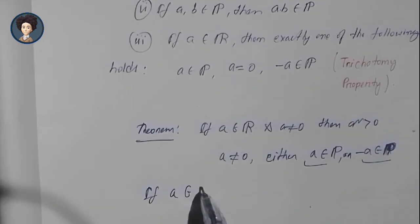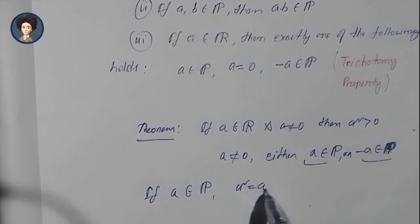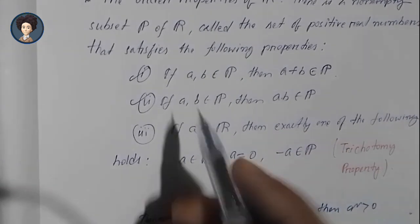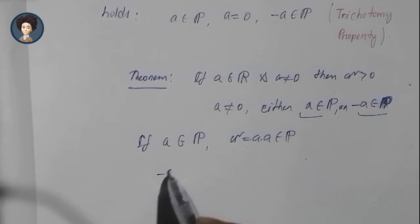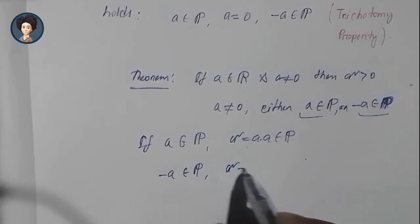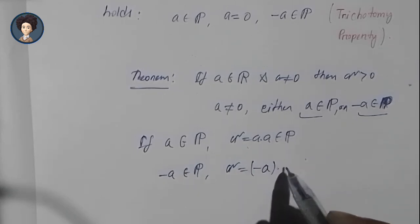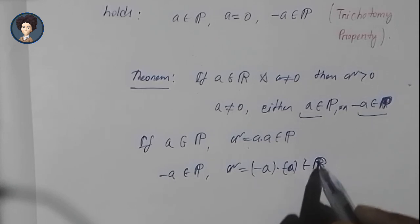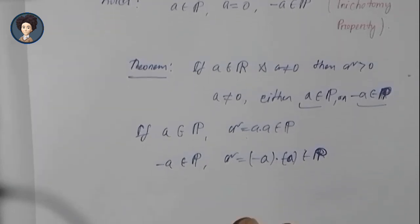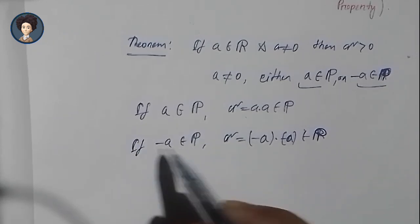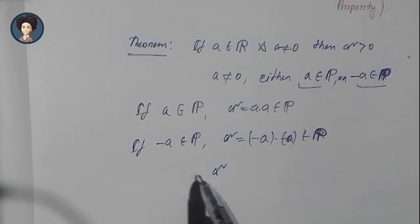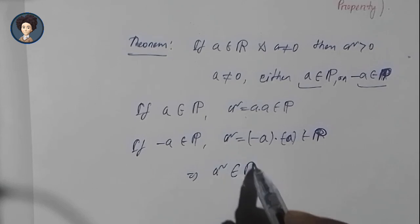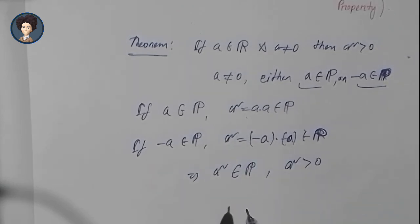For each case: if A belongs to P, then A squared equals A times A, which also belongs to P by the second property. If minus A belongs to P, then A squared equals (minus A) times (minus A), which also belongs to P by the second property. In both cases A squared belongs to P, meaning A squared is greater than zero.